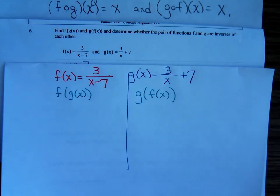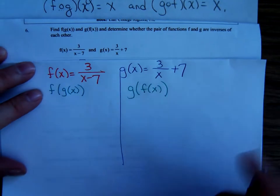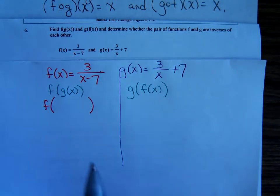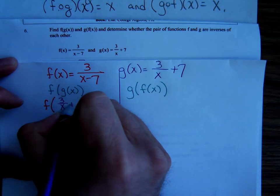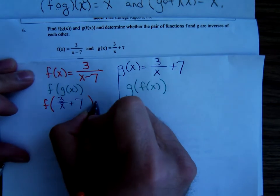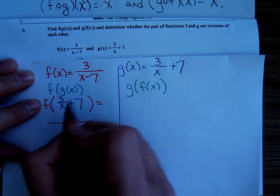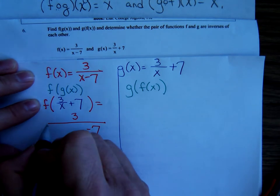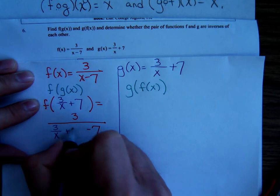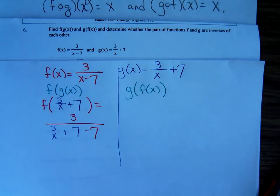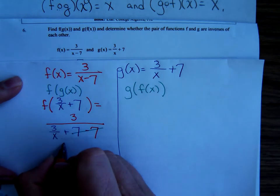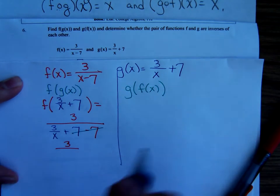We've got to find f of g of x and g of f of x. So f of g of x, that means you're going to plug g into f. f of g, g is the 3 over x plus 7. Go to the function f and in place of that red x, it's going to look sort of messy. You're going to put all of this blue stuff, the 3 over x plus 7. Let's see how we can simplify this. Well, the 7 minus 7 those subtracted out. So we have a 3 on top over the blue 3 over x.